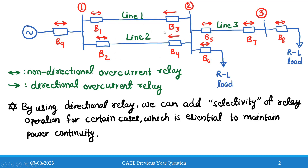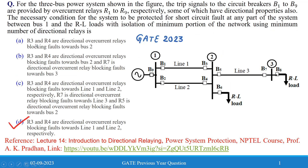Now checking the options: Option A states that R3 and R4 are directional overcurrent relays blocking fault towards bus 2. This would also be correct if it were a multiple-choice question where we select multiple answers, but let us also examine the other options.